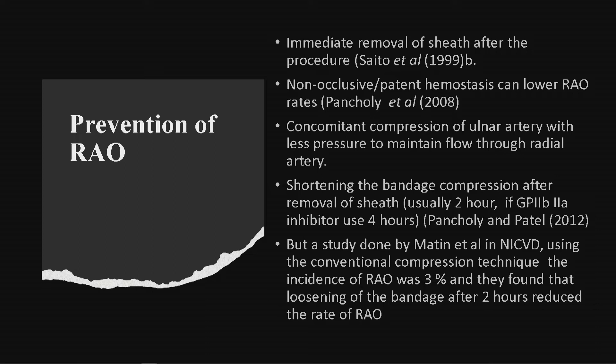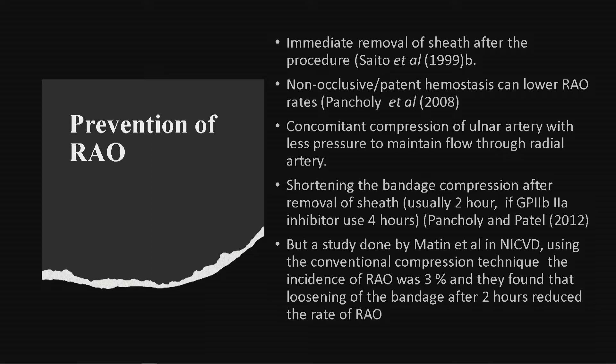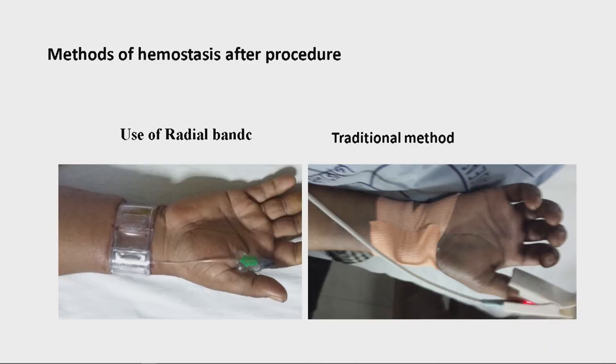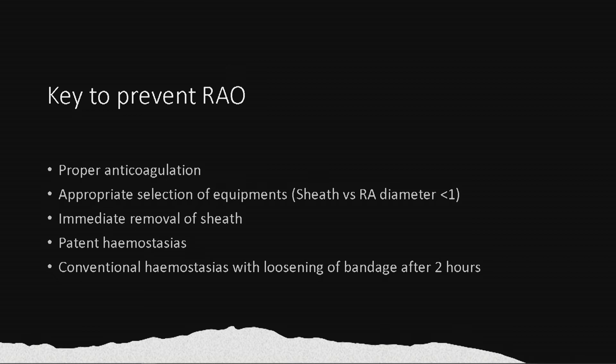Shortening the bandage compression after sheath removal — usually two hours — is mandatory and very helpful. A study done by Martin et al. under the guidance of Professor Mir Jamaluddin, of which I am also a co-author, found that using conventional compression technique the incidence of radial artery occlusion is not very high — only 3% — and that loosening the bandage after two hours reduces the rate of radial artery occlusion. Published in the Bangladesh Heart Journal. In our country, 99% use the traditional method of bandage compression rather than the radial band, and this is effective provided we loosen the bandage after two hours to maintain patency.